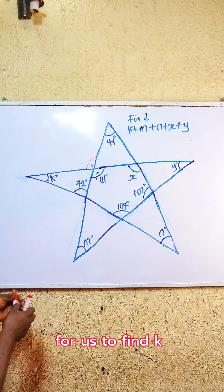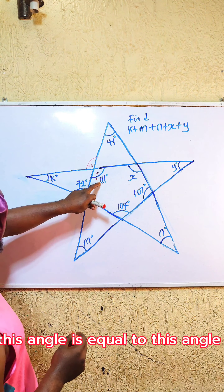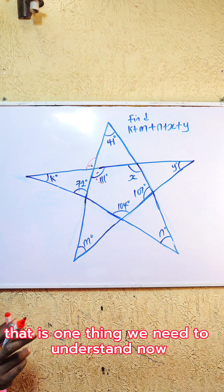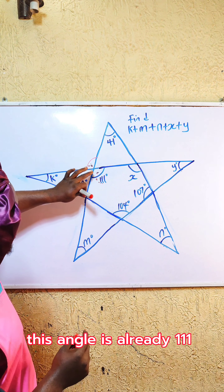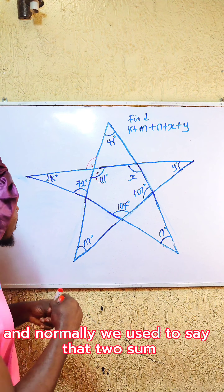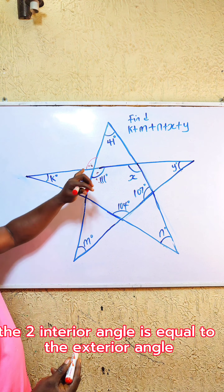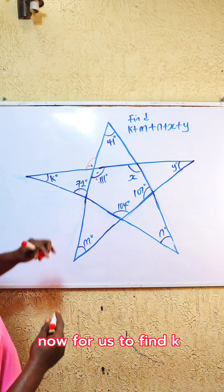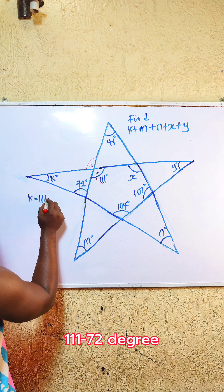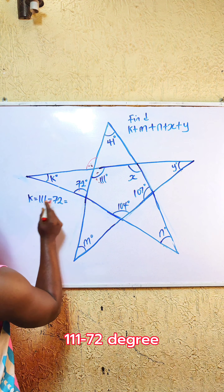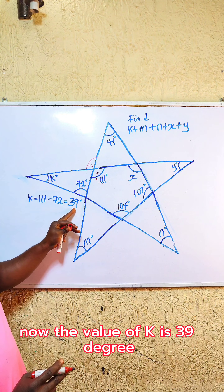First of all we are going to find k. To find k, we need to understand that this angle is equal to this angle. The exterior angle theorem tells us that two interior angles sum to the exterior angle. This angle is already 111°, so to find k: k = 111 minus 72 degrees, which gives us 39 degrees. The value of k is 39°.